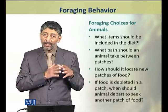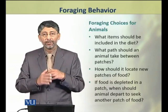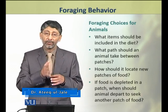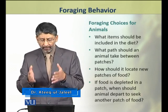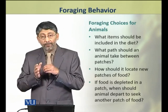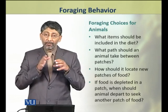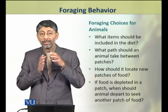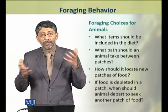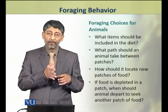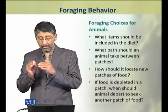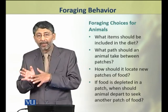An animal living in an environment has certain available choices of food and the animal has to make decisions about these choices. These choices include, for example, what items should be included in the diet. If the food is in patches, what path should an animal take between the patches? How should it locate new patches of food? And if the food is depleted in one patch, when should an animal depart to seek another patch of food?